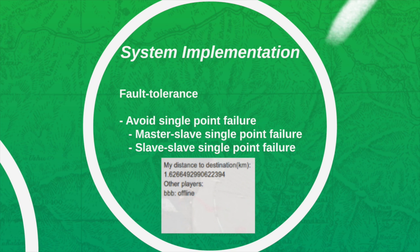Finally, the fault tolerance. Whenever a user is offline because of network failure, the message parser embedded in the slave server of other users will target the offline user. In this case, other users will continue to finish the game rather than quit the game because of the network failure of others.